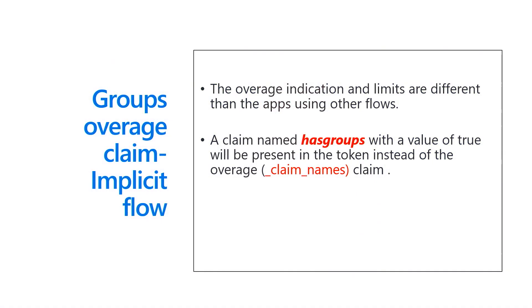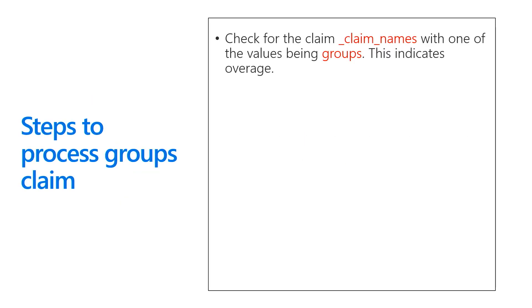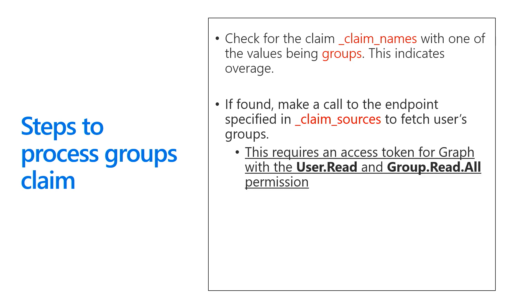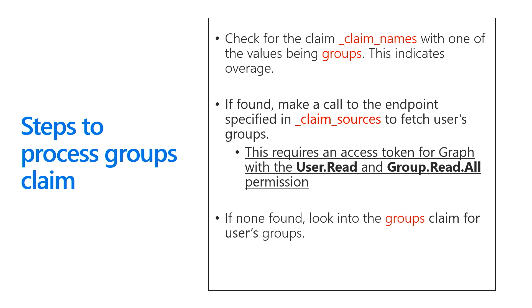For JWT tokens in implicit flow applications, the limit is only 6 group IDs, because since it's a single-page app everything goes through redirects and the URIs can only be so long. If there are too many groups, the claim will be returned as 'hash groups' and you still have to call the API to figure out group membership. So you check for the claims name — one of the values of those groups — this indicates overage. If found, you have to call the endpoint to find all group memberships. You need an access token for Microsoft Graph with the 'user.read' and 'group.read.all' permissions — a permission only an admin can consent to, which may be a barrier. If you don't find the overage claim, you can look for the groups claim and find the group IDs normally.